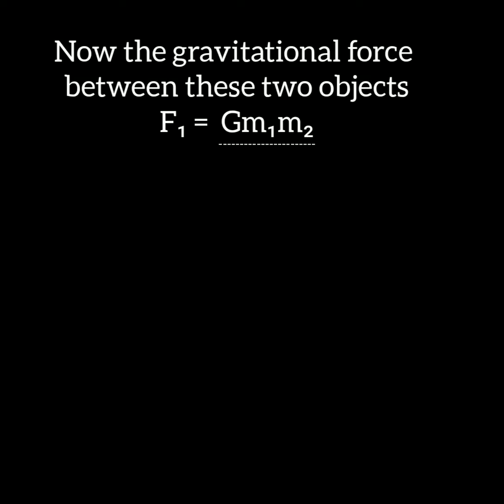Now the new gravitational force when the distance is reduced to half equals F1. F1 represents the new gravitational force. So F1 equals G M1 M2 divided by (D by 2) all squared, because the distance is reduced to half.